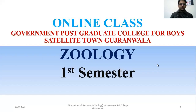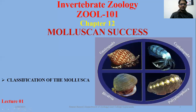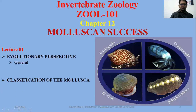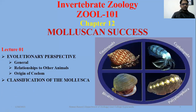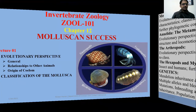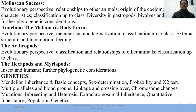Bismillahirrahmanirrahim. For today's discussion, the topic is Phylum Mollusca. Today's evolutionary perspective, general features, relationship to other animals, and origin of the coelom — we will cover these topics, along with the classification of Mollusca. If you look at our syllabus contents, the topic of Mollusca includes evolutionary perspective, relationship to other animals, origin of coelom, and molluscan characteristics.